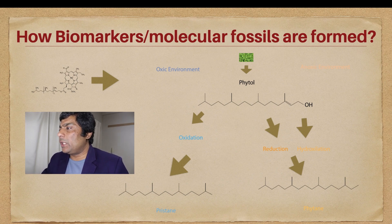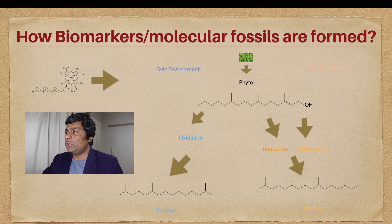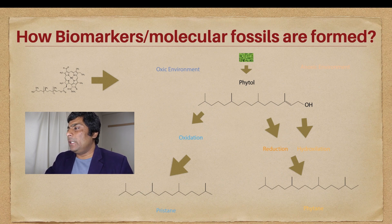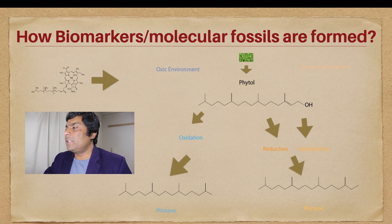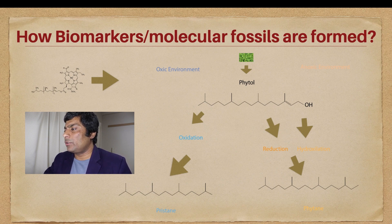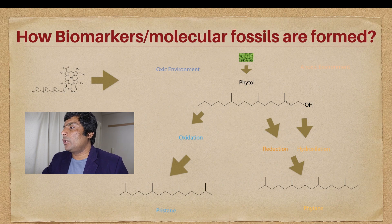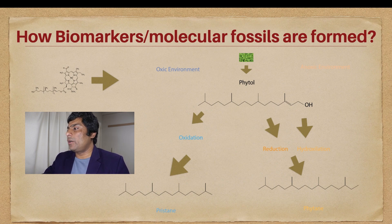The depositional environment can be oxic or anoxic. Oxic environment means the presence of oxygen, and anoxic environment means the absence of oxygen. The tree leaf decomposes to form complex molecules, including phytol. This phytol also undergoes some oxidation. When it faces oxidation, many complex molecules are formed — this is shown in a very simplified diagram. When phytol undergoes oxidation, it forms pristane.